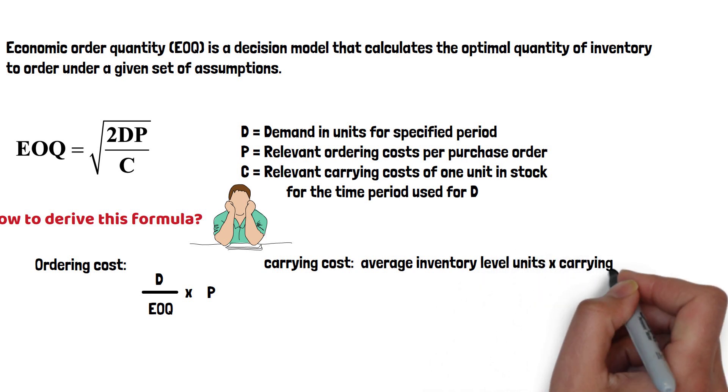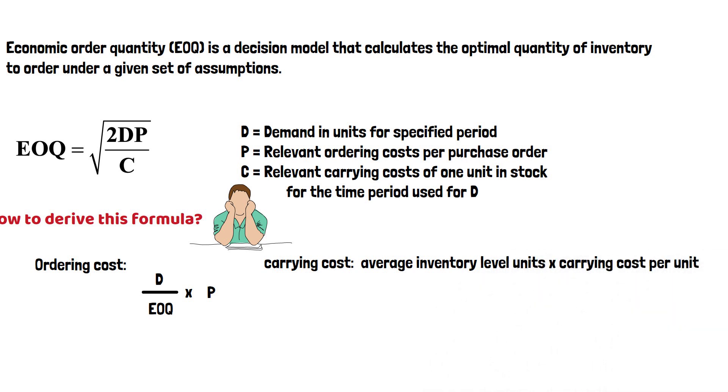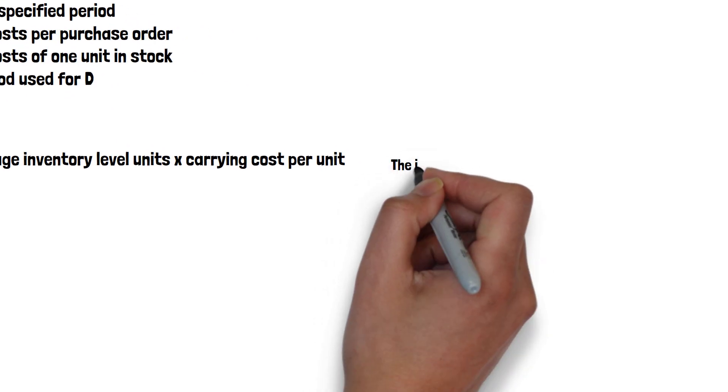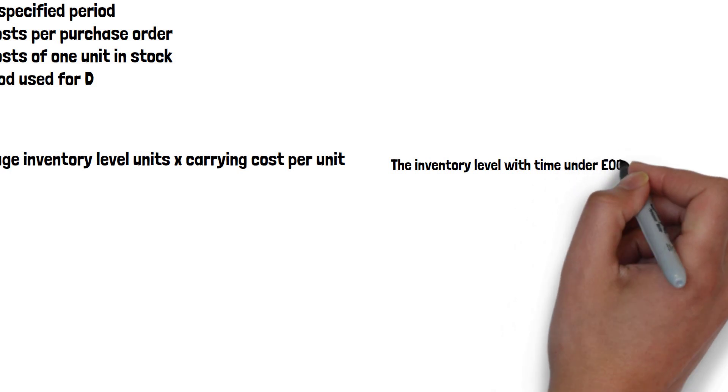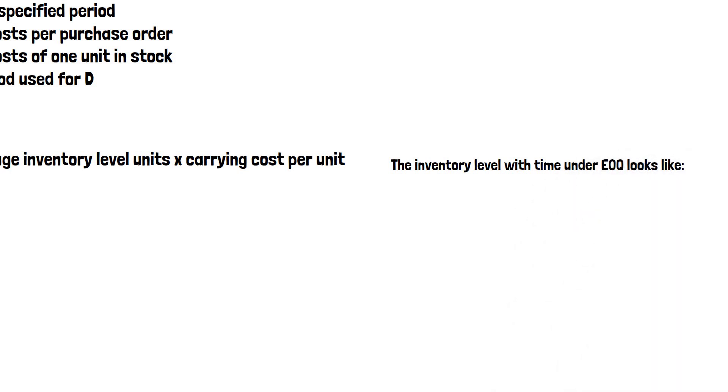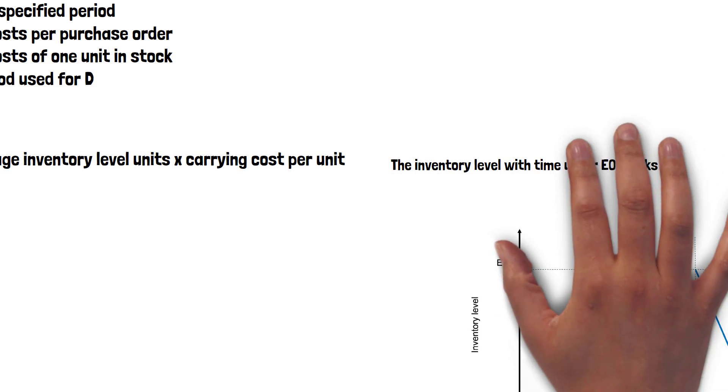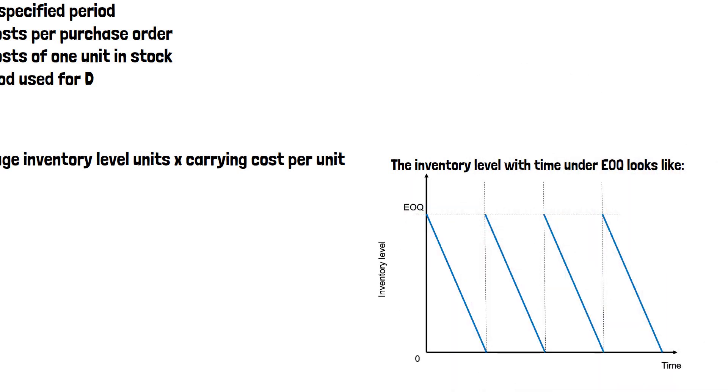Carrying cost is calculated by the average inventory level in units times carrying cost per unit. The inventory level over time under the EOQ model looks like this. From this picture, you can see that the inventory is between EOQ and zero.